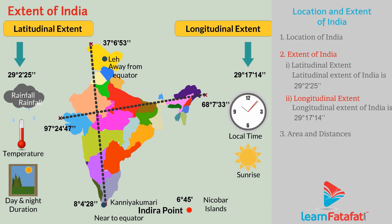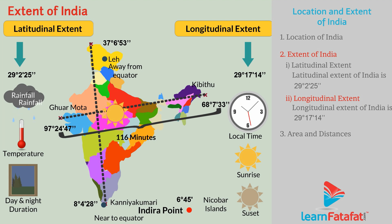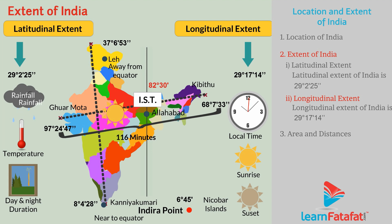Local time, sunrise, and sunset are determined by longitudinal extent. The difference between sunrise at Kibithu in Arunachal Pradesh in the east and Guhar Mota in Gujarat in the west is about 116 minutes. The Indian Standard Time (IST) is taken as per the local time of the longitude 82 degrees 30 minutes east, which passes close to Allahabad.